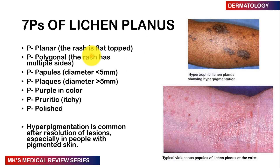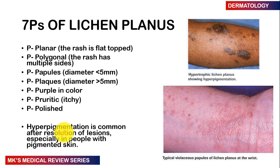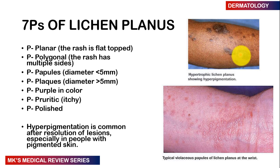The symptoms can be characterized by the seven Ps. The first P is planar — meaning a flat top. The second P is polygonal — meaning the rash has multiple sides. They can present as papules (diameter less than 5mm) or plaques (diameter greater than 5–10mm). They are purple in color, pruritic (itchy), and tend to appear polished. You may also get hyperpigmentation that is common after resolution of the lesions, especially in people with pigmented skin, as seen in hypertrophic lichen planus.